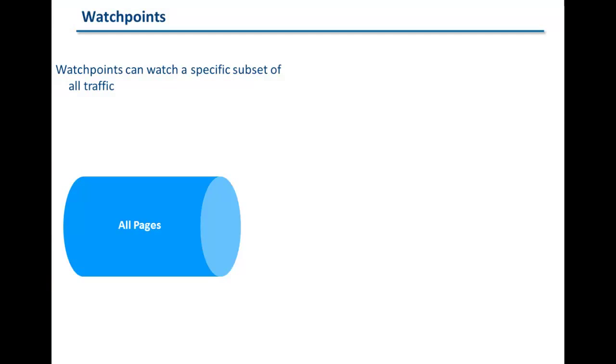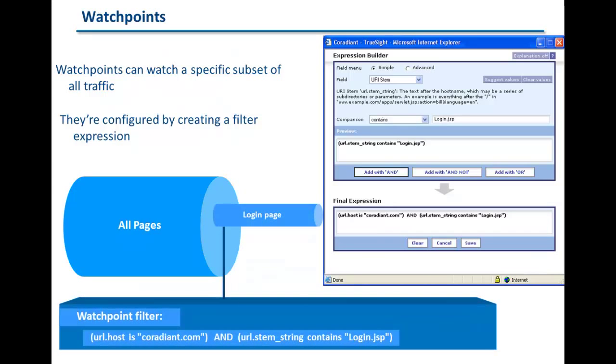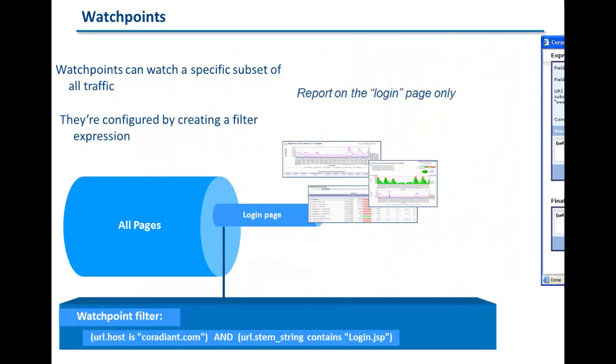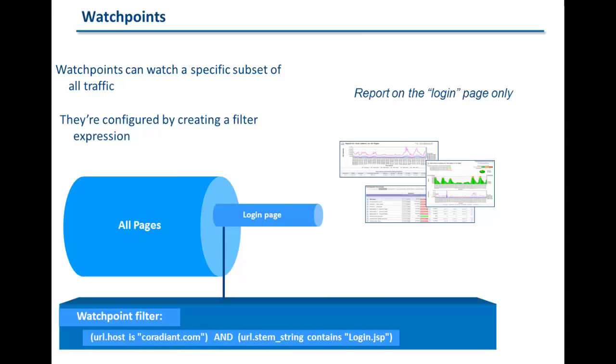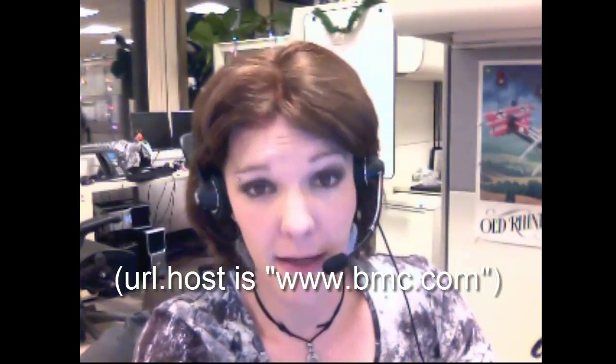Watch points are subsets of traffic, as defined by one or more filters. Subsets of traffic might focus on specific parts of your application, like the login page, the checkout page, or if you're using EUEM to monitor several applications, you might want to have watch points to focus on each of these applications, perhaps as defined by the URI host being targeted.